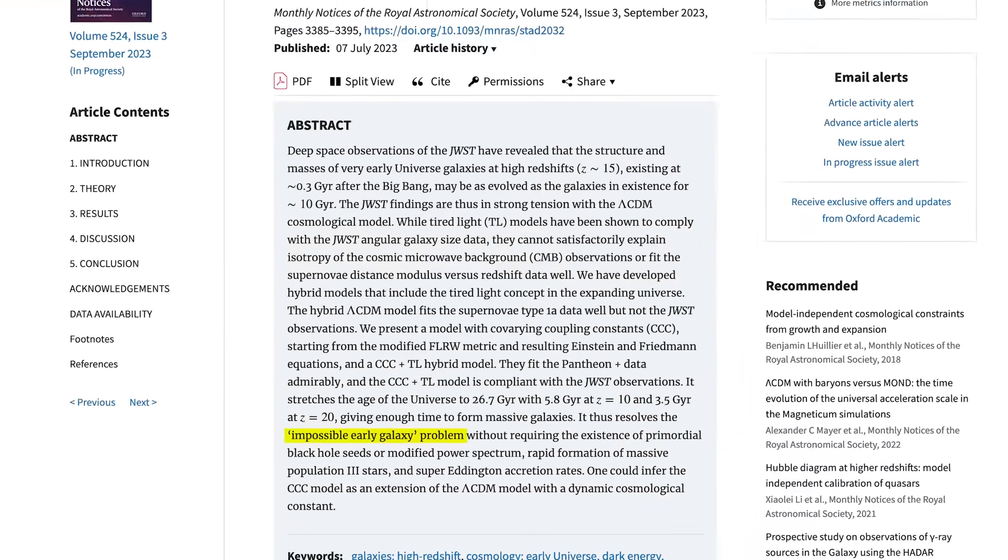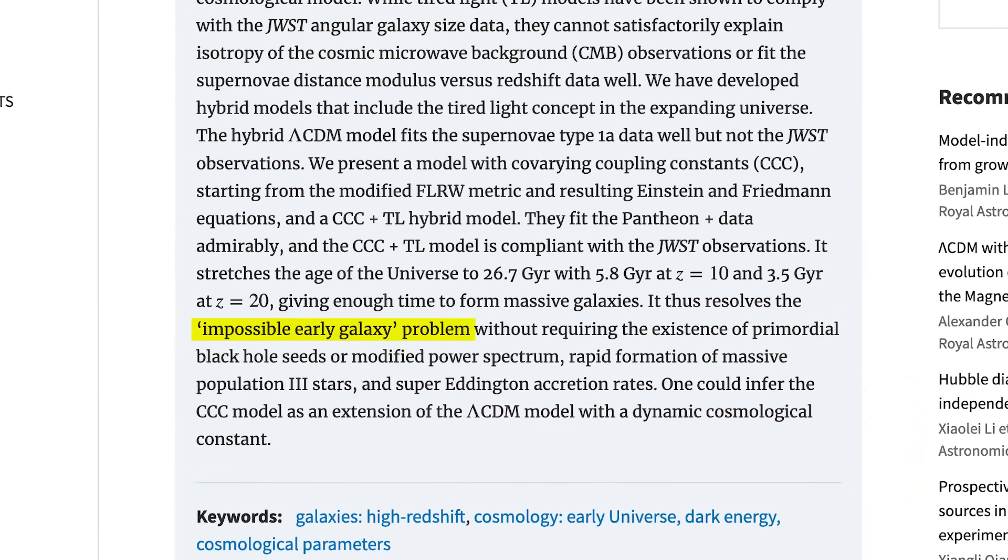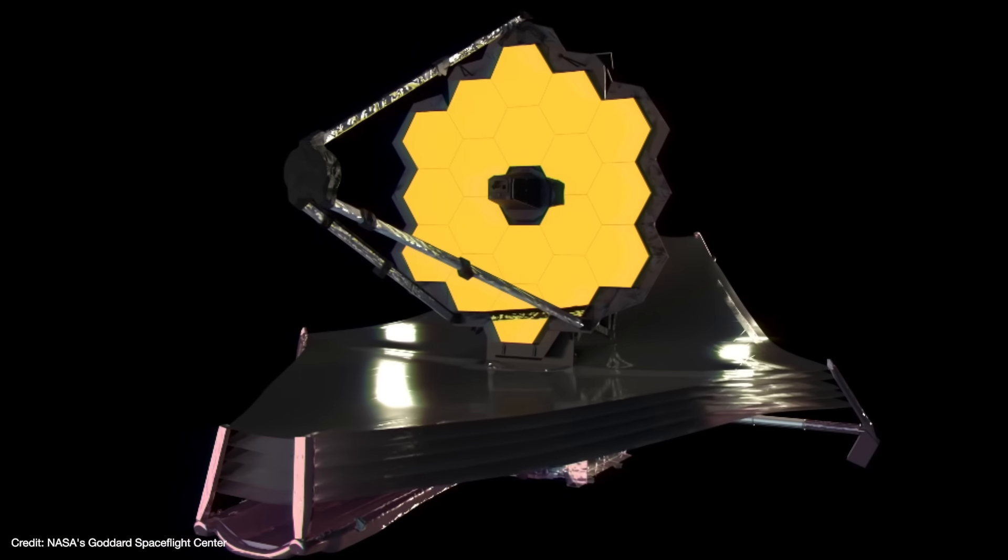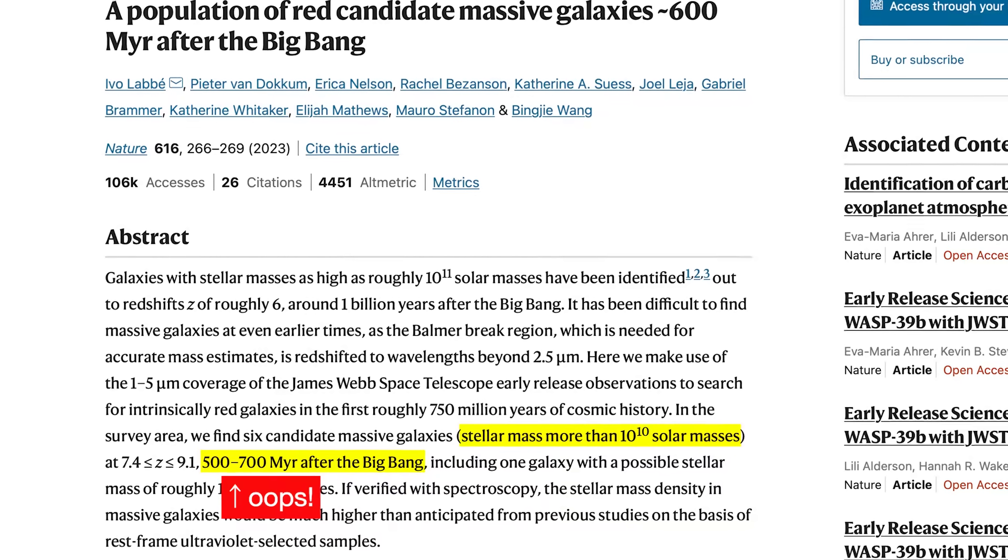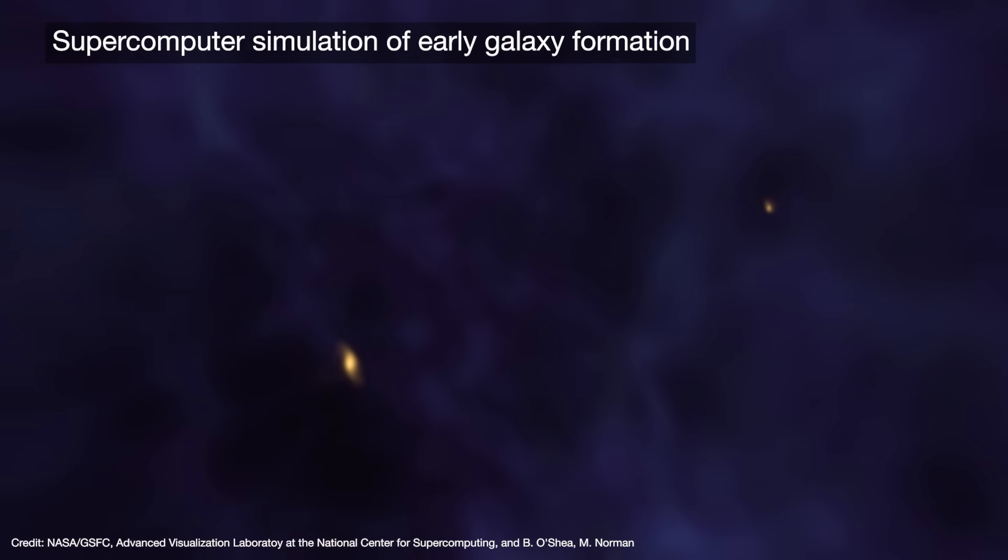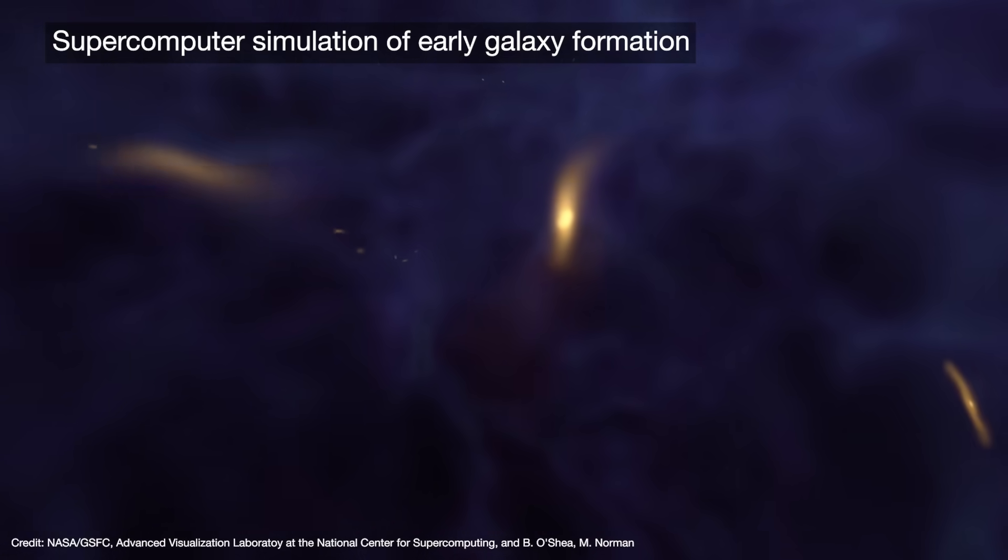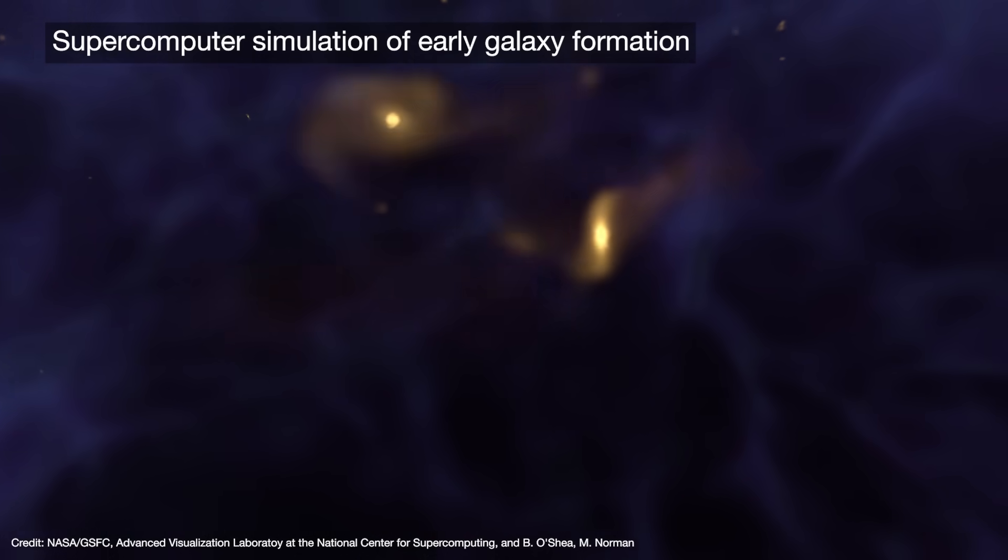Gupta's paper was motivated by what he calls the impossible early galaxy problem. It started when the James Webb Space Telescope found galaxies that were surprisingly massive, even though the universe was just 300 to 500 million years old at the time. To the best of our understanding, that's not nearly enough time for galaxies to have gotten so big. And that probably means there's something wrong with our understanding of how galaxies formed.